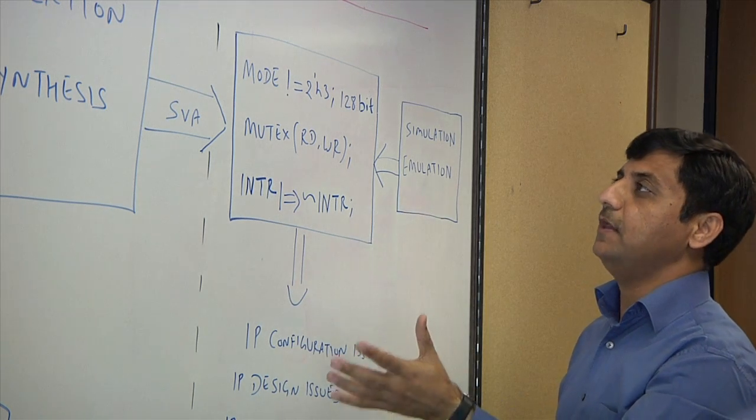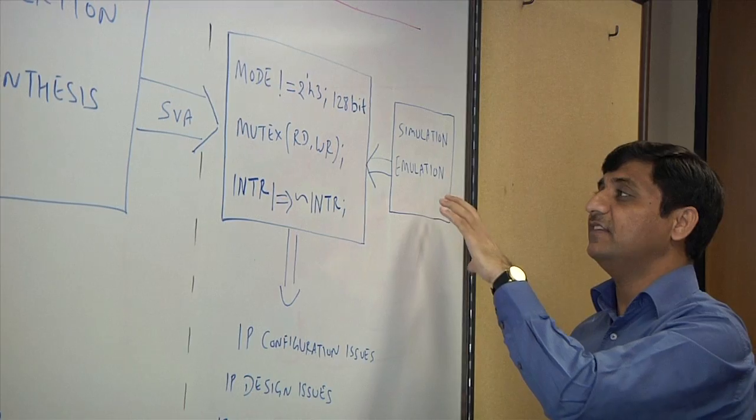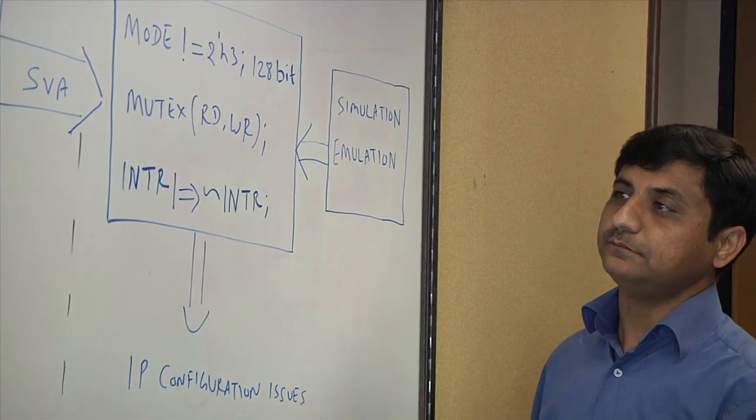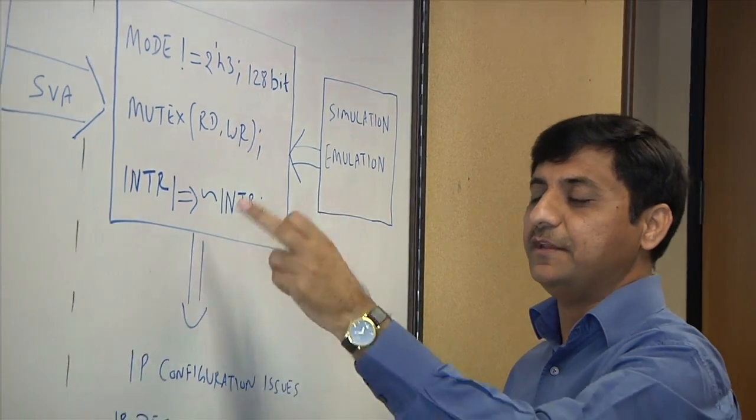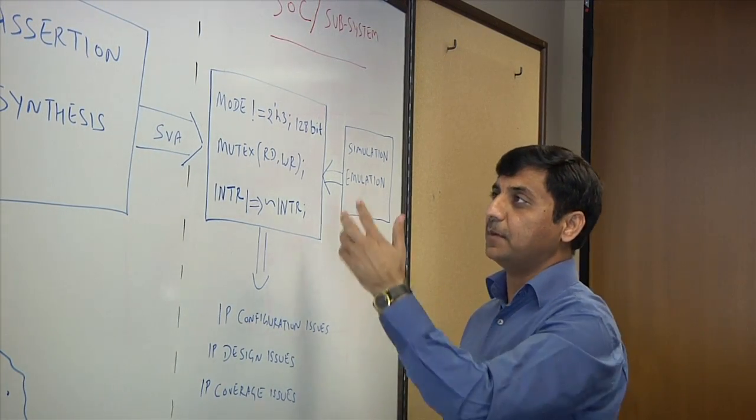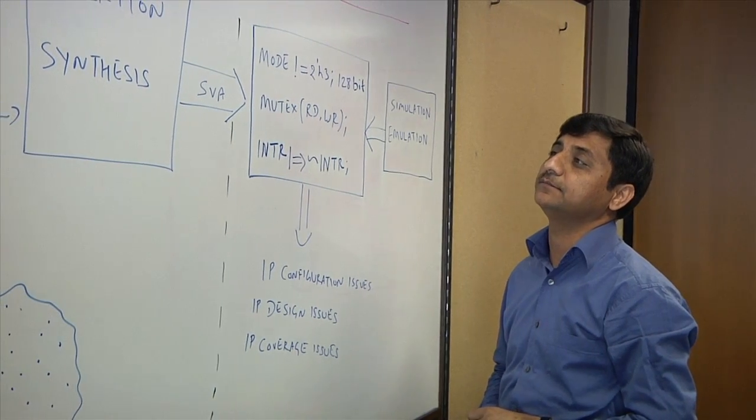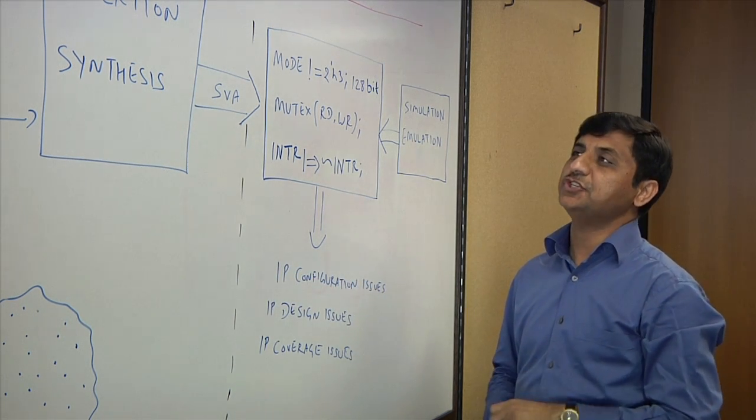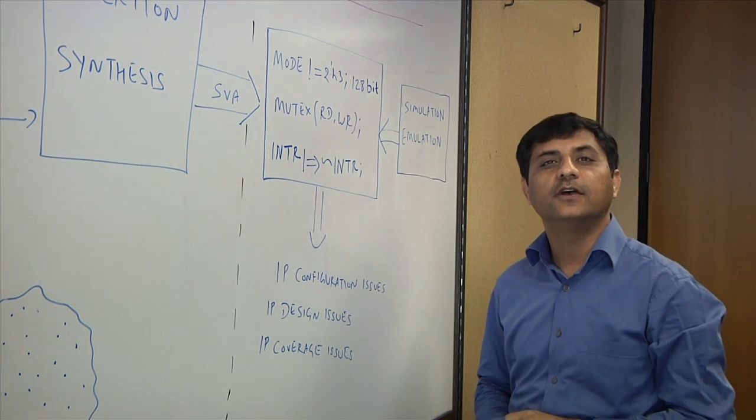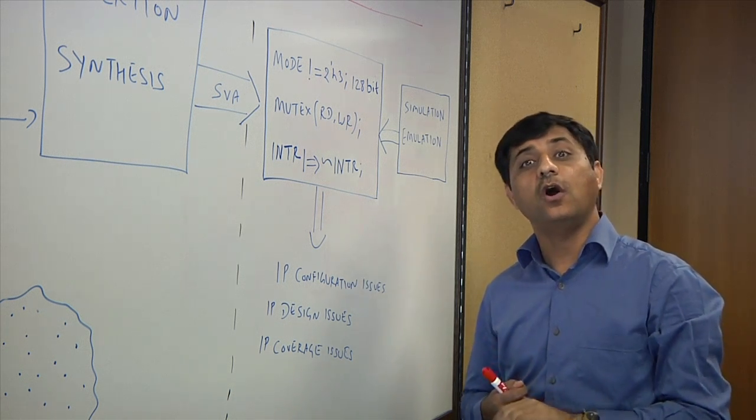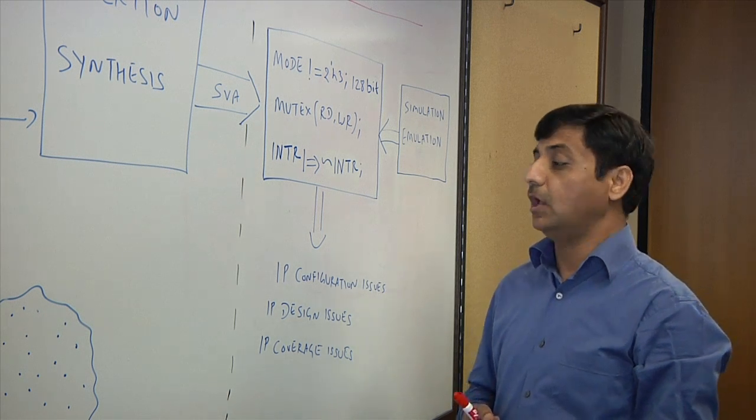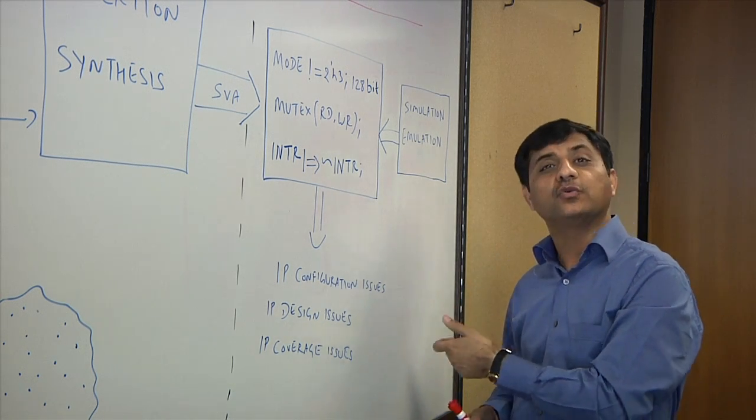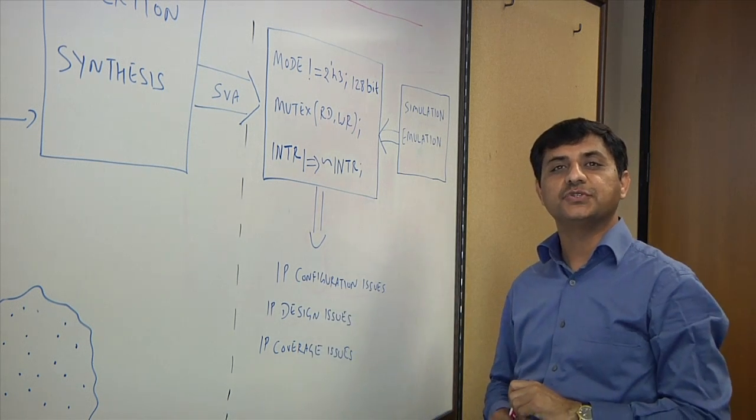Now once you have these properties which are representing your IP, you take it to your SOC verification environment. And this environment can be simulation based or emulation based. So these properties support both the platforms, whatever you have. Once you start simulating these properties in your SOC environments, invariably you will see that these properties will fail. And if these properties fail, we can kind of look at each example here one by one. If first property fails here, it will point to something like IP configuration issue, which is at SOC level, you are using 128 bit mode, but your IP either doesn't support it or it was not tested at IP level or you were not supposed to configure your IP that way at SOC level, but accidentally you configured your IP in such a way. So it's good to know that you're not verifying your IP correctly. So either way, you catch these IP configuration issues in a very predictable way.